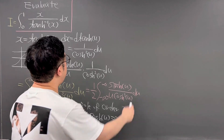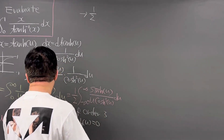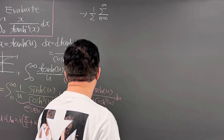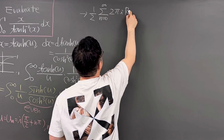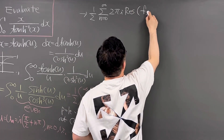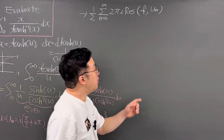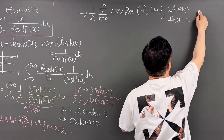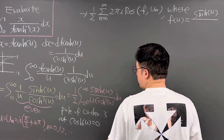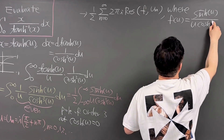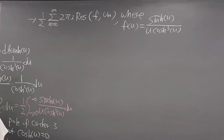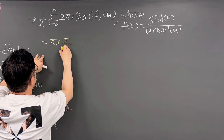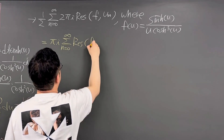Okay, so based on all of this, what we need to get is 1/2 times the summation from n = 0 to infinity. Then we have 2πi times the residue of f at u_n. In this case, f(u) is defined as sinh(u) divided by u · cosh³(u). If you multiply 1/2 and 2, eventually we need to talk about πi times the summation from n = 0 to infinity of the residue of f at u_n.